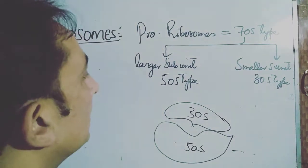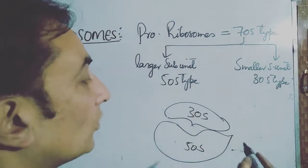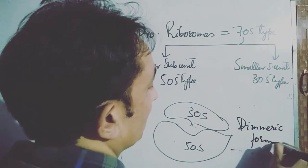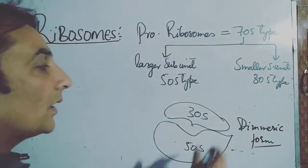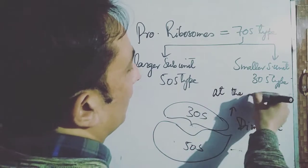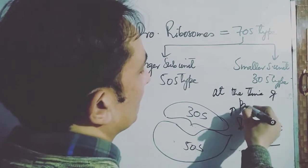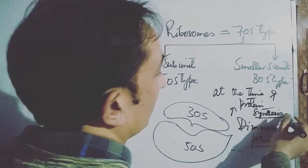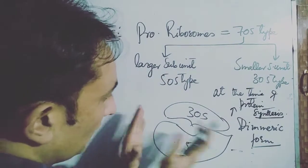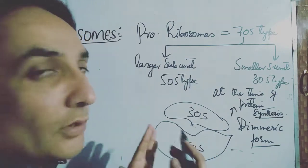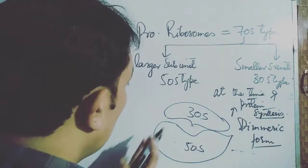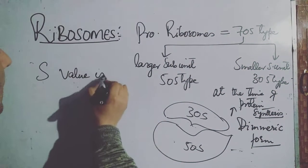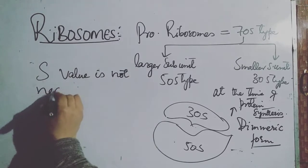These ribosomes do not exist in their joined form — called the dimeric form — at all times. The two ribosomal subunits unite only at the time of protein synthesis. Otherwise, they are found in monomeric forms, with the 50S subunit separate from the 30S subunit. Note that the S value is not necessarily additive.